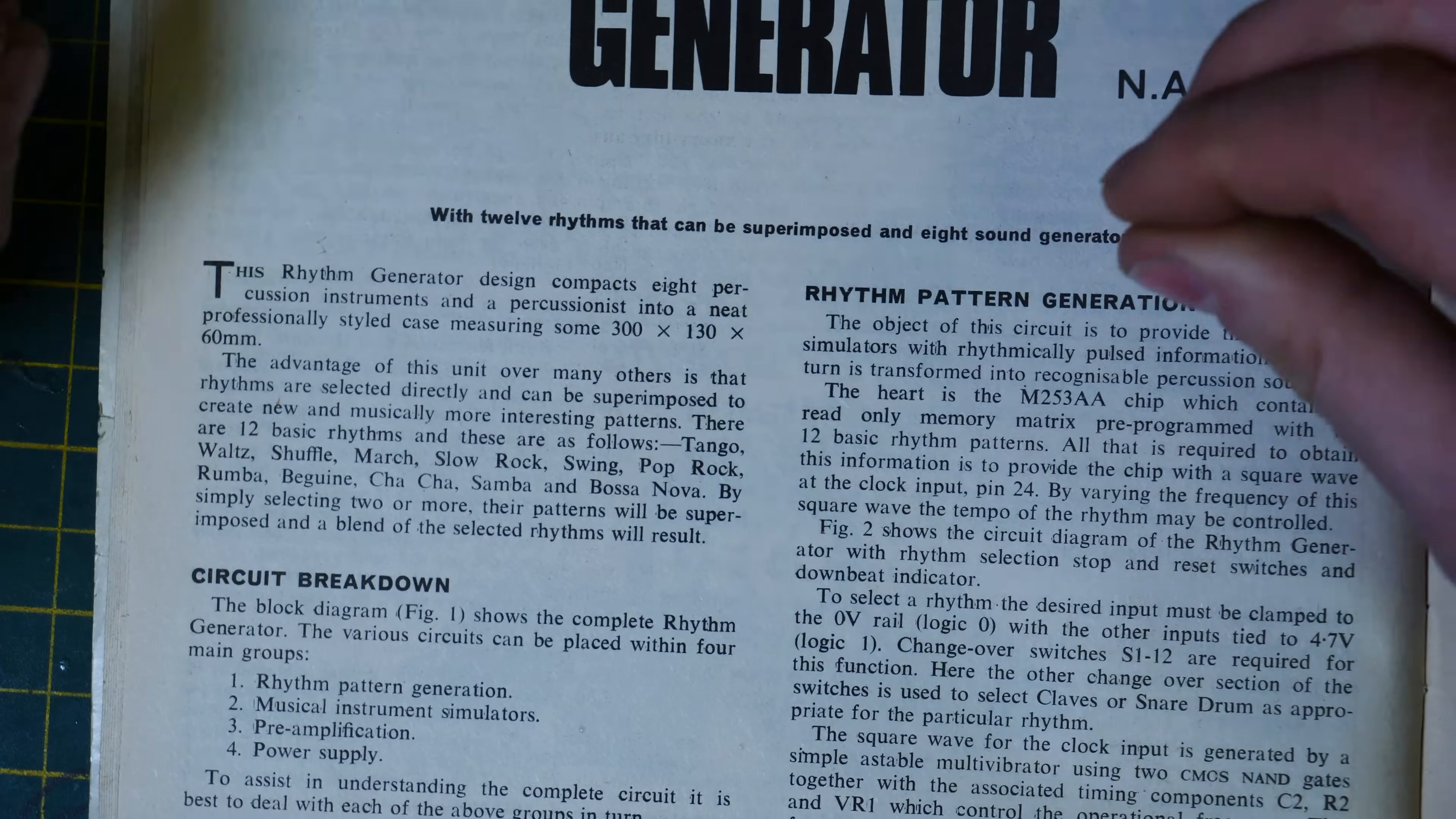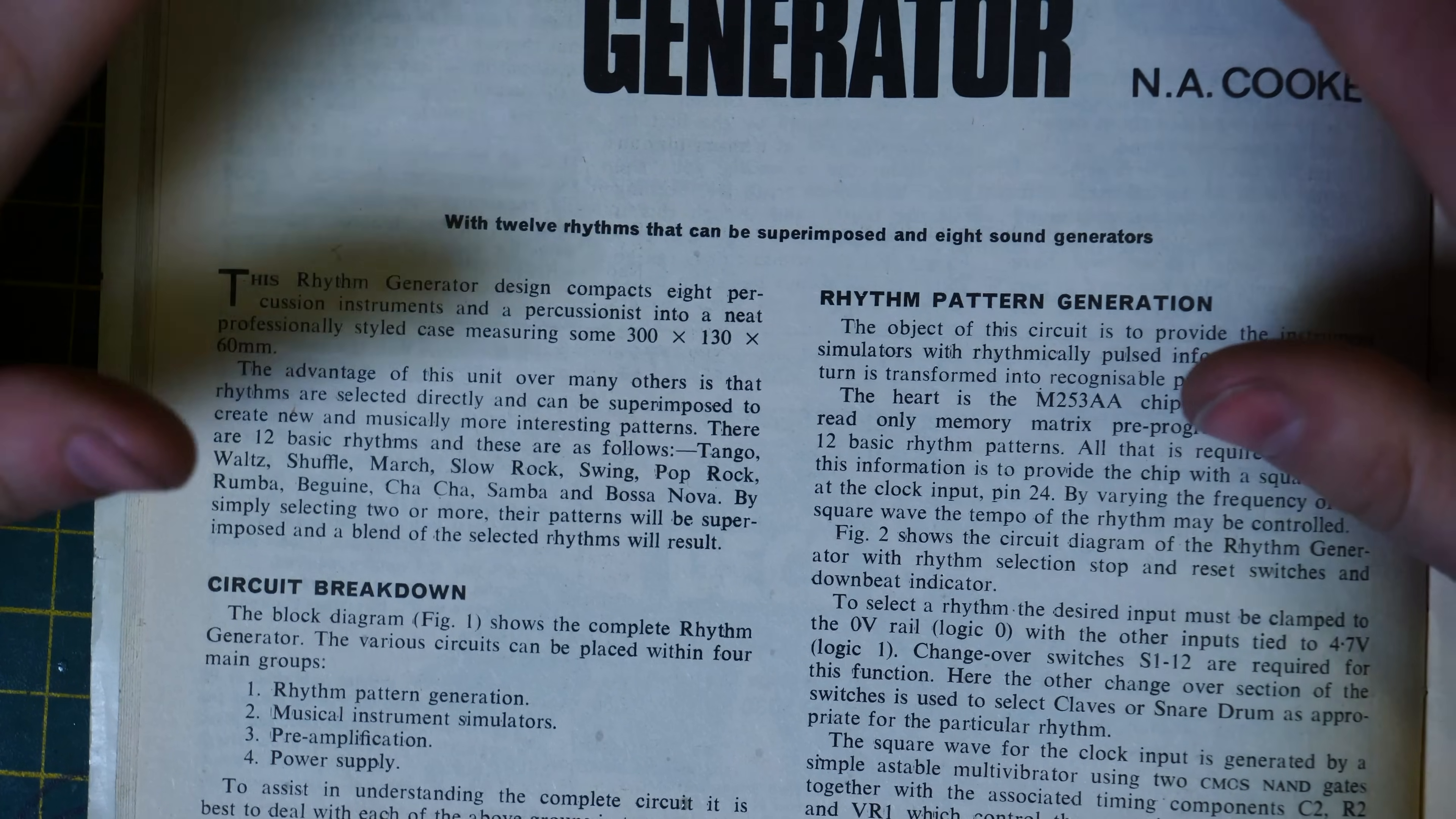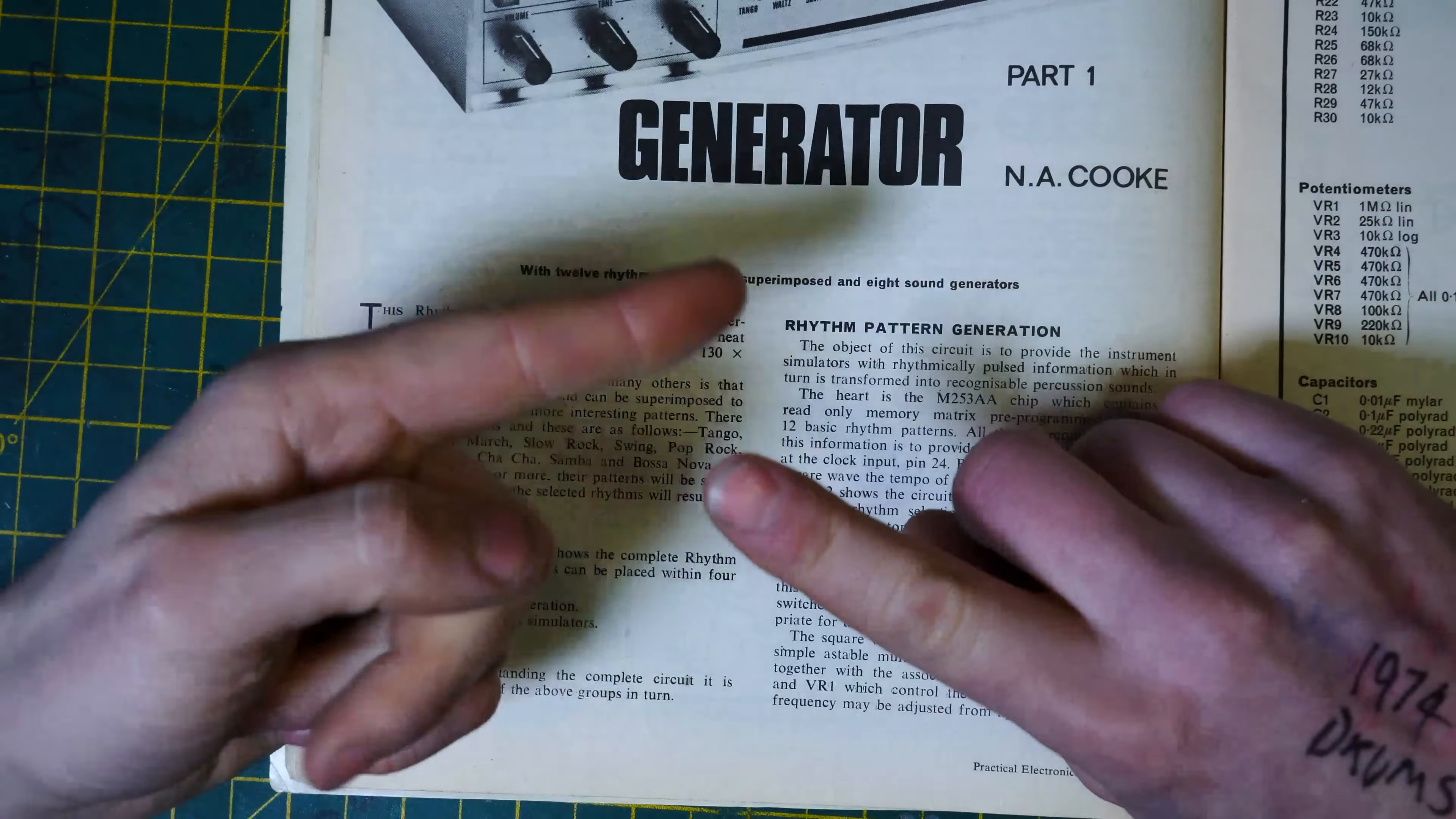This Rhythm Generator design compacts eight percussion instruments and a percussionist into a neat professionally styled case, measuring some 300 by 130 by 60 centimeters. So it's only a small little one. The advantage of this unit over many others is that Rhythms are selected directly and can be superimposed to create new and musically more interesting patterns. There are 12 basic Rhythms, and these are as follows. Tango, Waltz, Shuffle, March, Slow Rock, blah-de-blah-de-blah, Bossa Nova, of course. By simply selecting two or more, their patterns will be superimposed and a blend of the selected Rhythms will result.